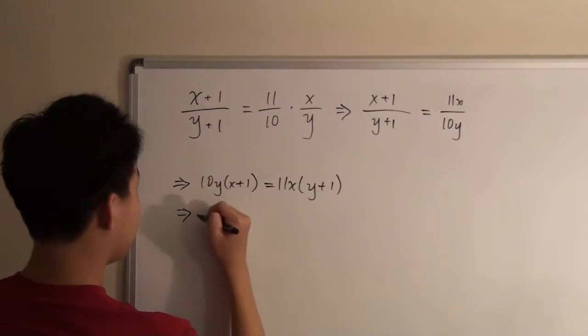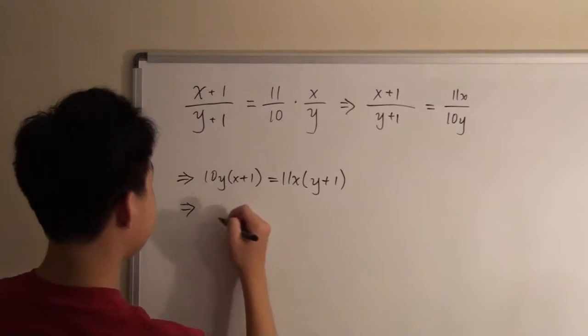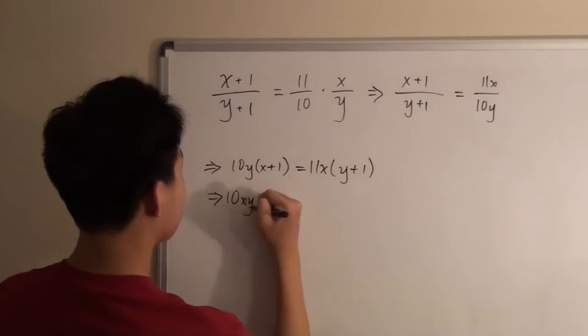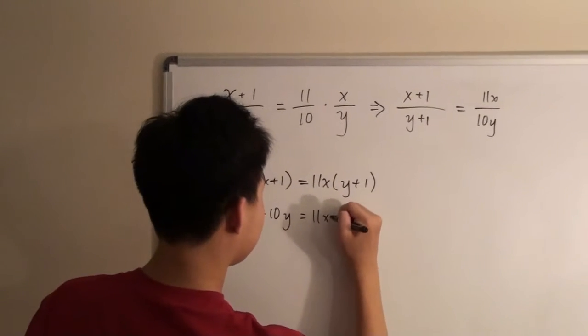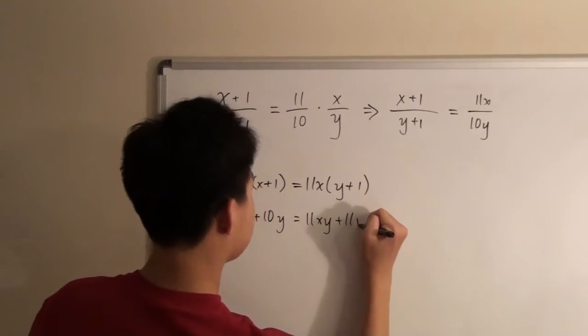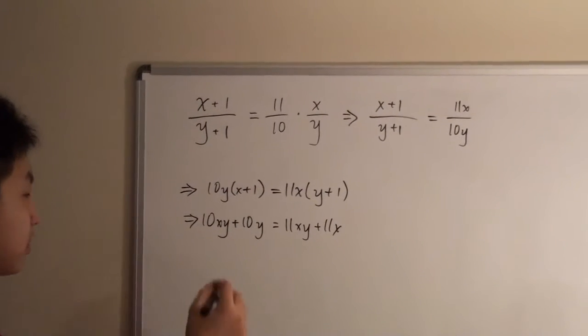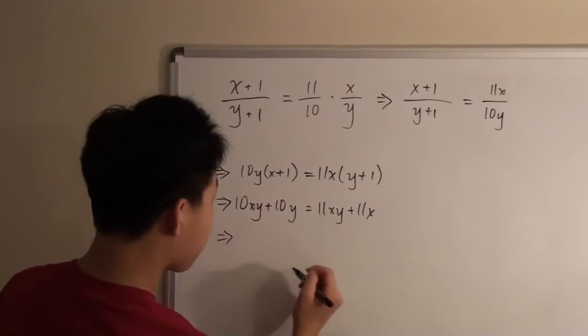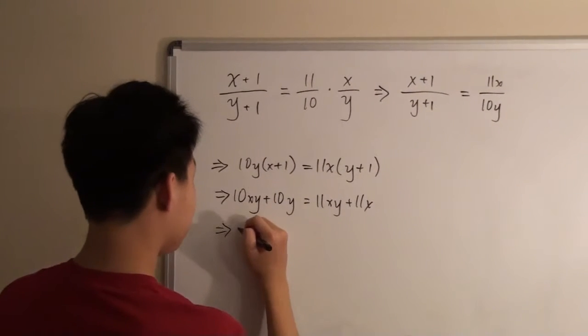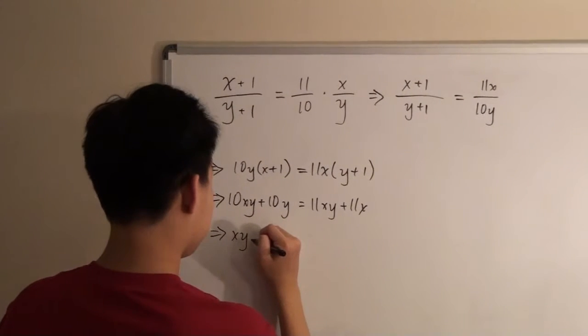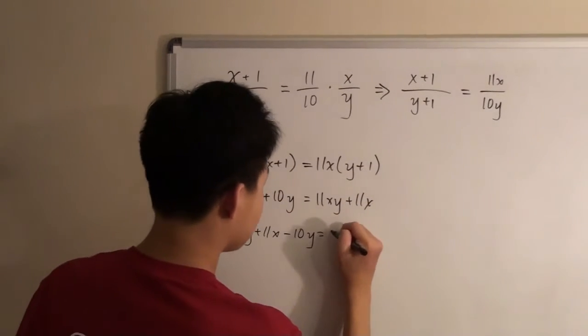And actually, expanding: 10xy plus 10y equals 11xy plus 11x. So now we can just combine like terms and figure out something from there. So this would be equal to xy plus 11x minus 10y equals 0.